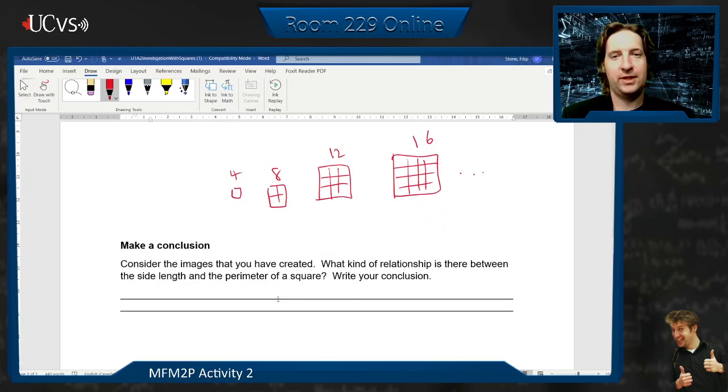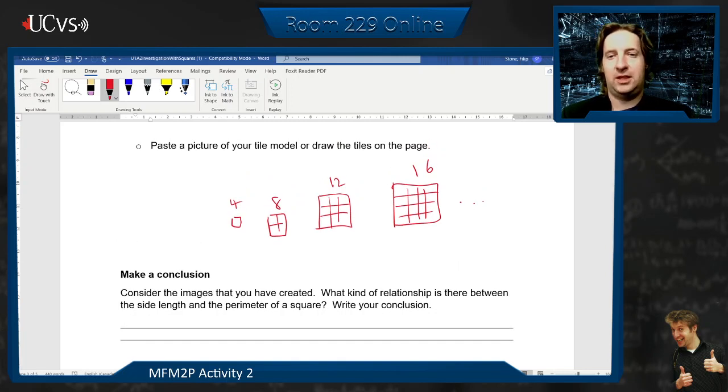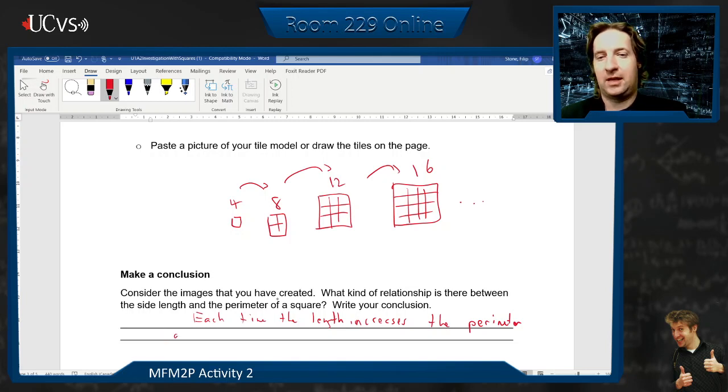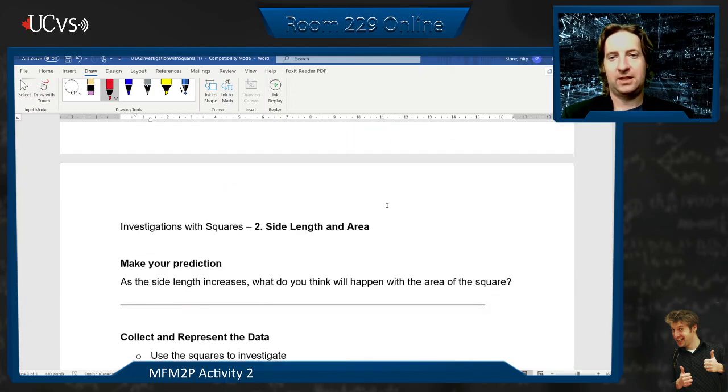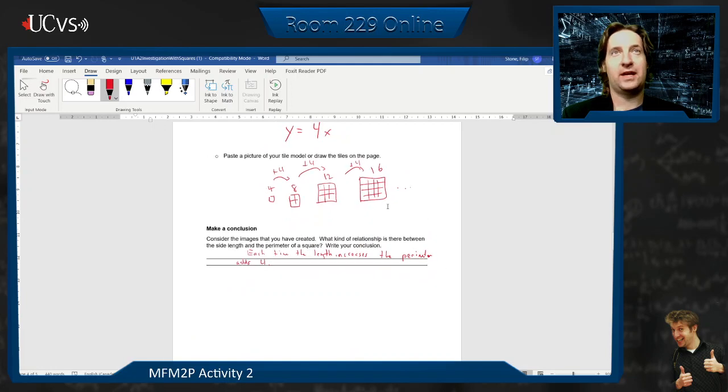So what's the relationship here? How would we describe this relationship? Each time. So we say each time. The length increases. Pardon, writing on a screen like this is difficult. Increases. The perimeter. What does it do? What is it? What are we doing each time we go up? We're adding. Perimeter adds how much? Four. Right? Every time we're going up here, we're adding four. So that's our pattern. The perimeter is linear. And the rate of change, the amount that's going up each time is four. Okay? So that's all that we had to do for that investigation.